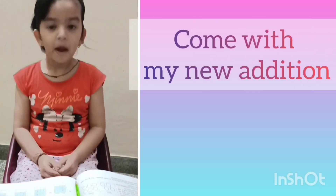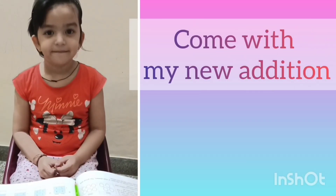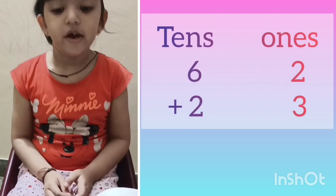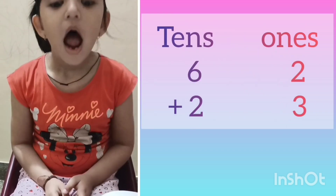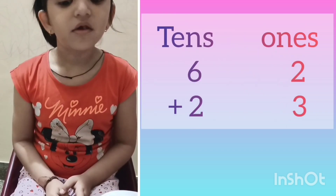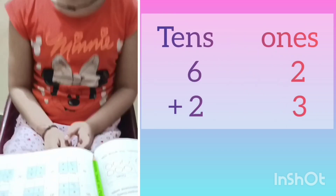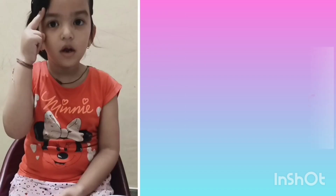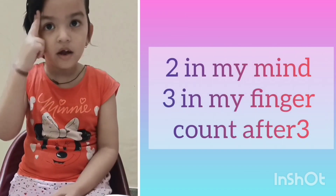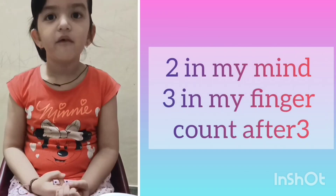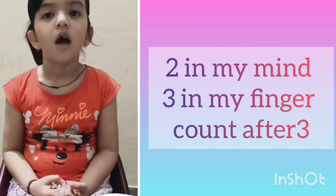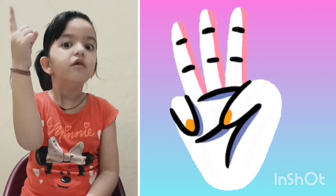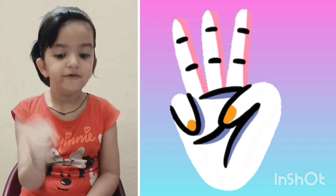Start with my addition. 2 and 3 and 1. 3 and 2 is 10. 2 in my mind, 3 in my finger, count after 3: 4, 5.